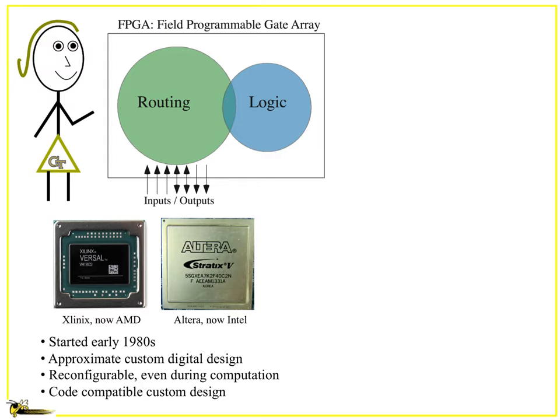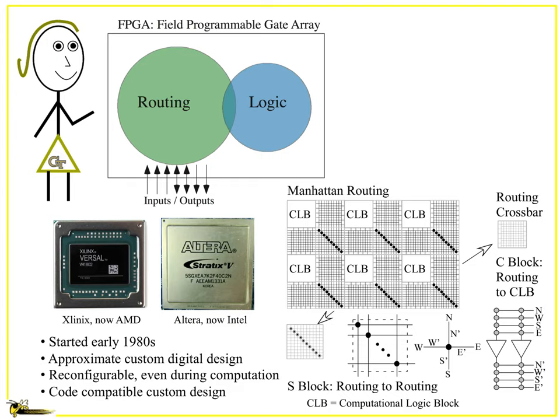They started in the 1980s and over the last 40 years have become an opportunity to do effectively approximate custom digital design and some other applications that you can reconfigure and change. It also has this wonderful opportunity that code is relatively compatible between devices. If you look at it closely, you're going to be talking about what is typically called Manhattan routing, which is used in both of these structures, which are typically going to be computational logic blocks with various lookup tables and SRAMs, and you have routing in between C blocks and S blocks.